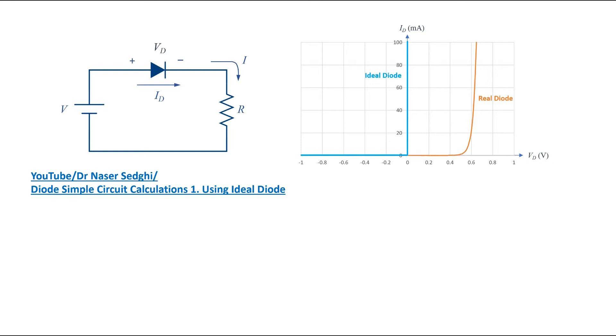A more accurate model is to assume the diode has a constant voltage when it is in forward bias. This is fairly accurate, since the voltage in a real diode in forward bias does not change significantly with current.